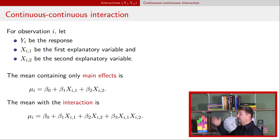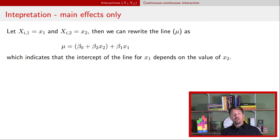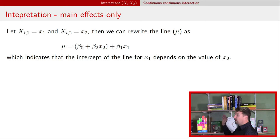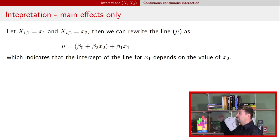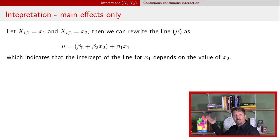Let's think about how to interpret the parameters in these two models. For the main effects model, if we treat x2 as a constant and rearrange, we get an intercept of (beta-naught plus beta-2 times x2) and a slope of beta-1 for x1. What x2 does is just shift the intercept — if you change x2, the slope always stays the same. Similarly, thinking of it as a line for x2, only the intercept changes when x1 changes.